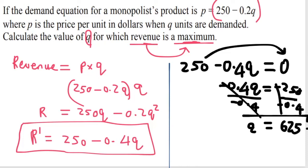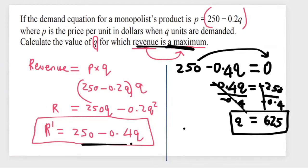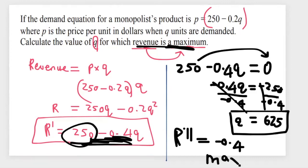So is this a minimum or a maximum? Looking at this, I need to differentiate this one more time. So having R double prime, this will become 0, and this will become minus 0.4. Because the value is negative, then I know it's a maximum. And indeed, this is verifying that the revenue, the value of Q, is 625 for us to have maximum revenue.